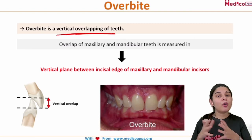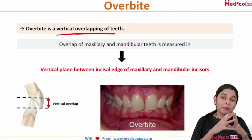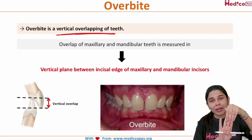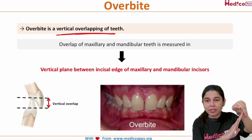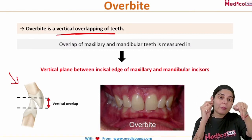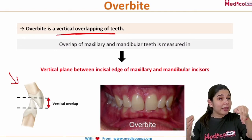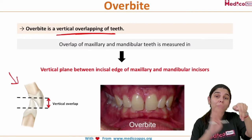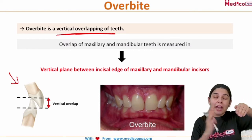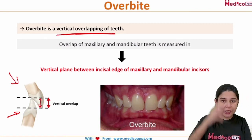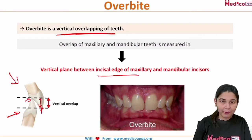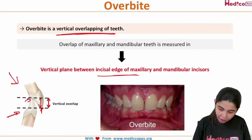Overbite is nothing but the vertical overlapping of the tooth. The overlap is measured when the maxillary and mandibular teeth are in occlusion. Normally there is a bit of overbite present, but when it goes beyond the normal range it is known as vertical overlap. This is the vertical overlapping between the incisal edges of the maxillary and the mandibular teeth.